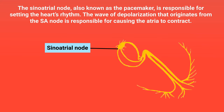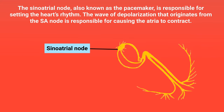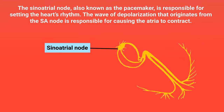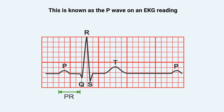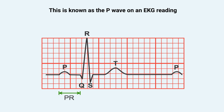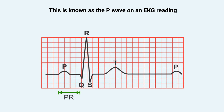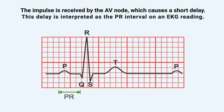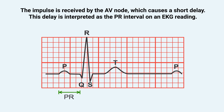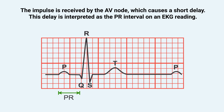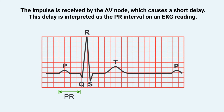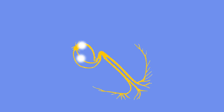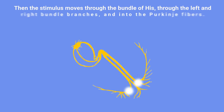The wave of depolarization that originates from the SA node causes the atria to contract, which is known as the P wave on an EKG reading. The impulse is then received by the AV node, which causes a short delay — interpreted as the PR interval on an EKG reading.